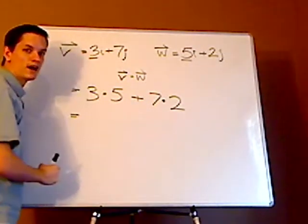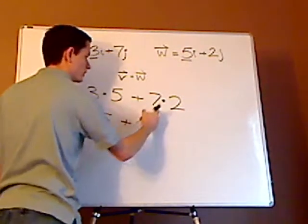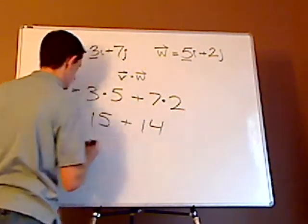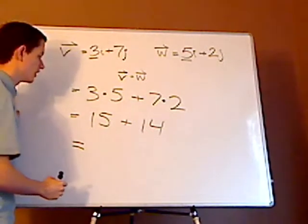What's 3 times 5? 15. What's 7 times 2? 14. And then what's 15 plus 14? Right, 29.